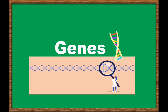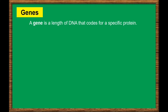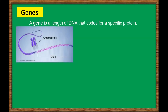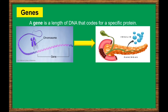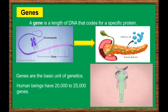Genes are segments of DNA which provide instructions or detail codes for specific traits or qualities that you have, or for a specific protein. For example, one gene will code for the protein insulin, which plays an important role in helping your body to control the amount of sugar in your blood. Genes are the basic unit of genetics. Human beings have 20,000 to 25,000 genes. These genes account for only about 3% of our DNA. The function of the remaining 97% is still not clear, although scientists think it may have something to do with controlling the genes.